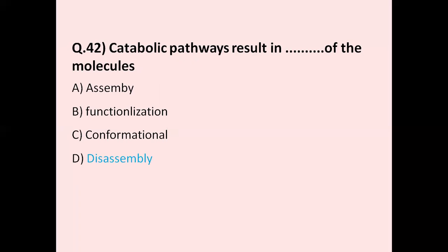Question 42: Catabolic pathways result in — option A assembly, option B functionalization, option C conformational change, option D disassembly. The correct answer is disassembly. In catabolic pathways, large molecules are broken into small ones. Assembly is used by anabolic pathways. The correct answer is D, disassembly.